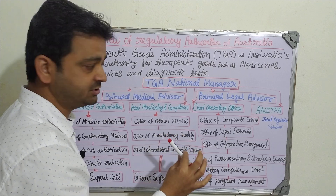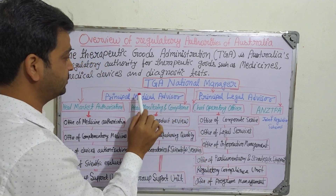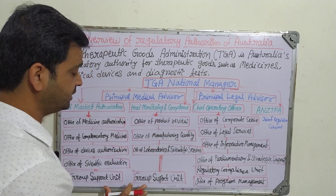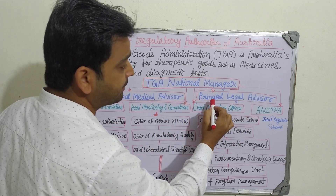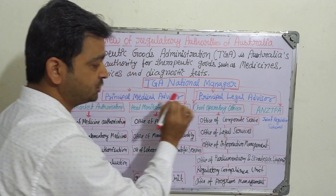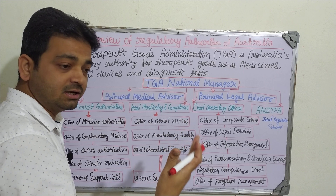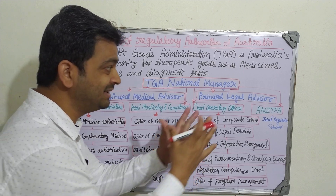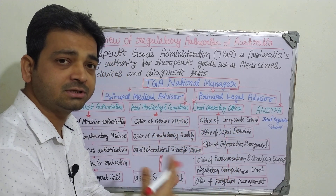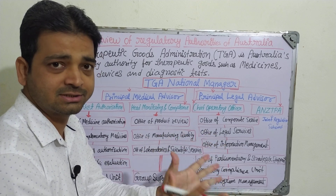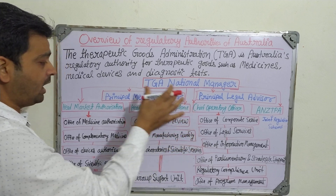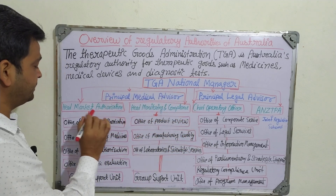Under the National Manager, there is the Principal Medical Advisor and the Principal Legal Advisor. The medical advisor handles medical terms and conditions, while the legal advisor handles documentation proceedings and governmental processes. These two advisor offices sit directly under the National Manager.